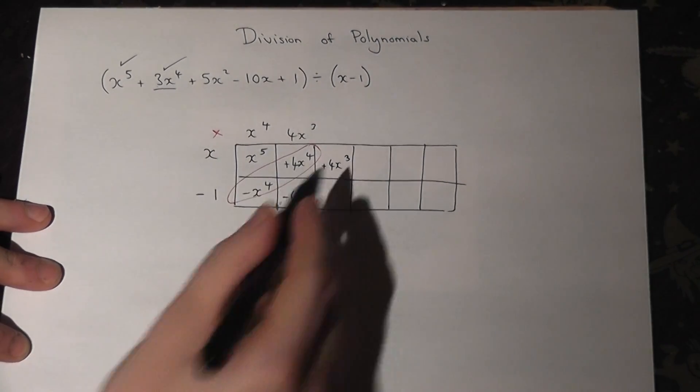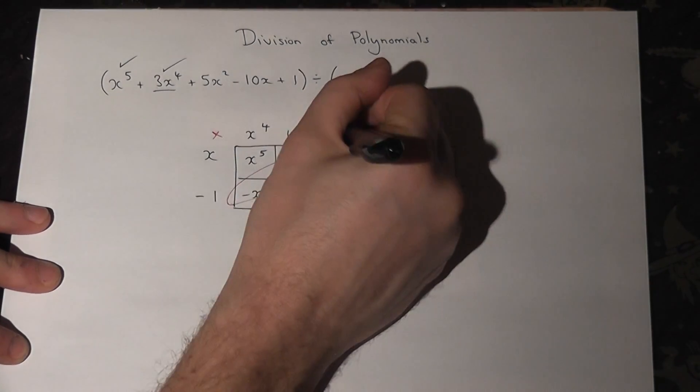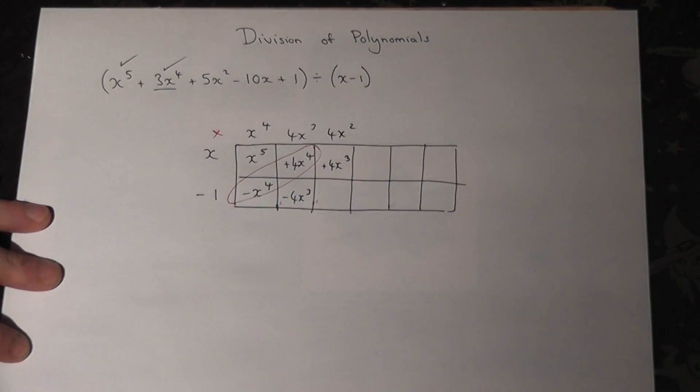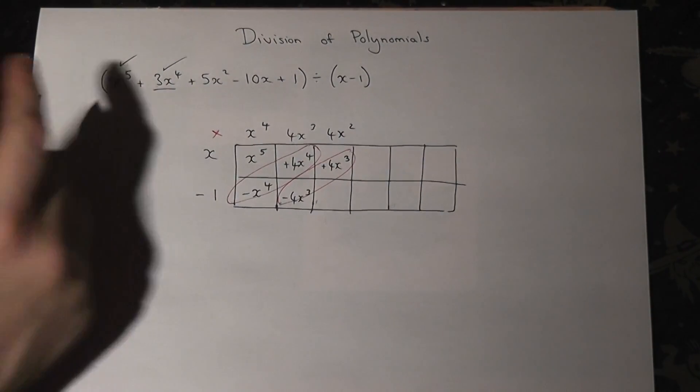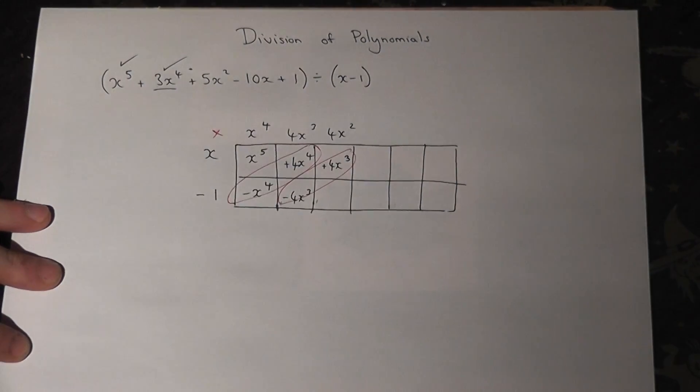So x times what is 4x cubed? x times 4x squared. These now give us our x cubed, which have been here somewhere. There aren't any of them at all.